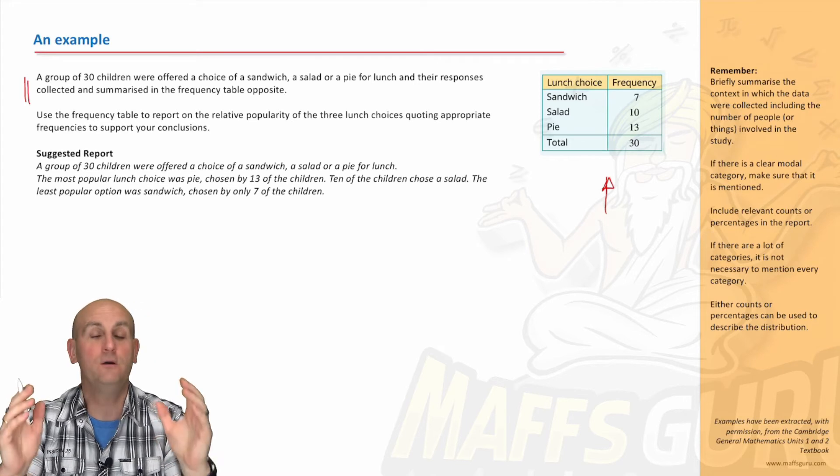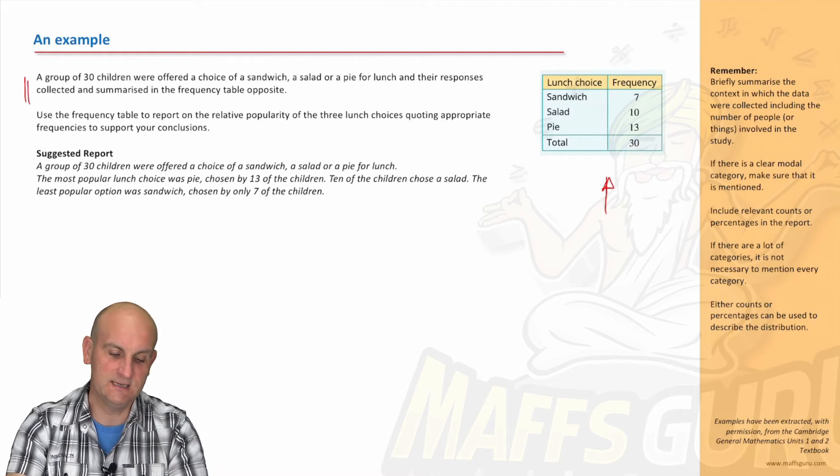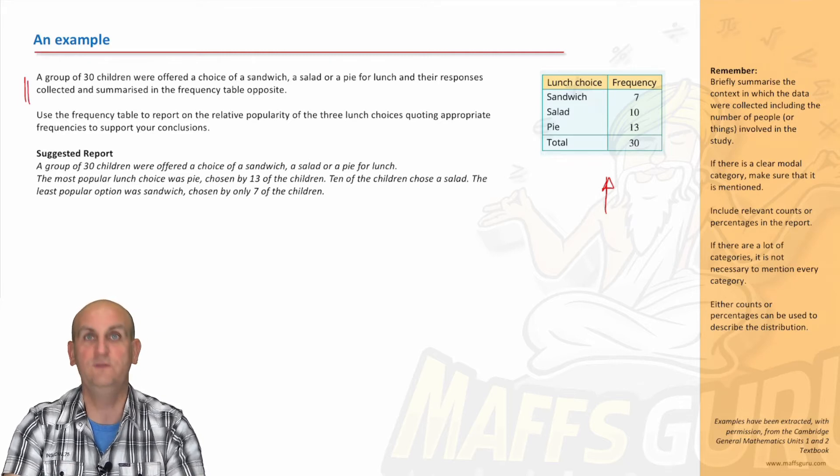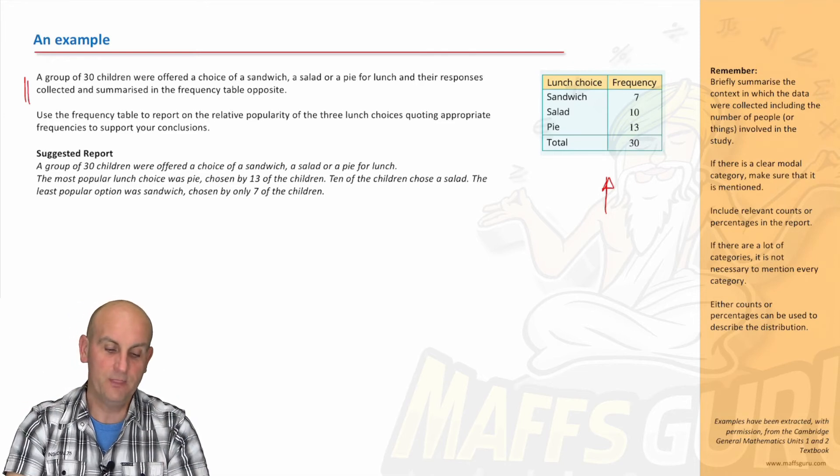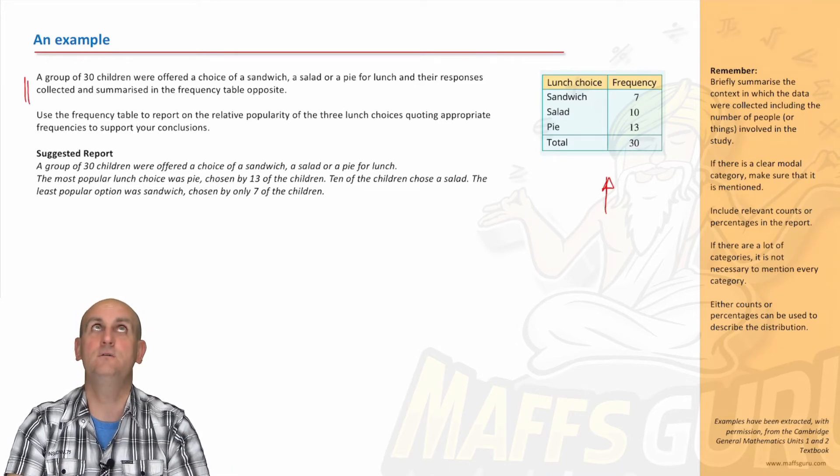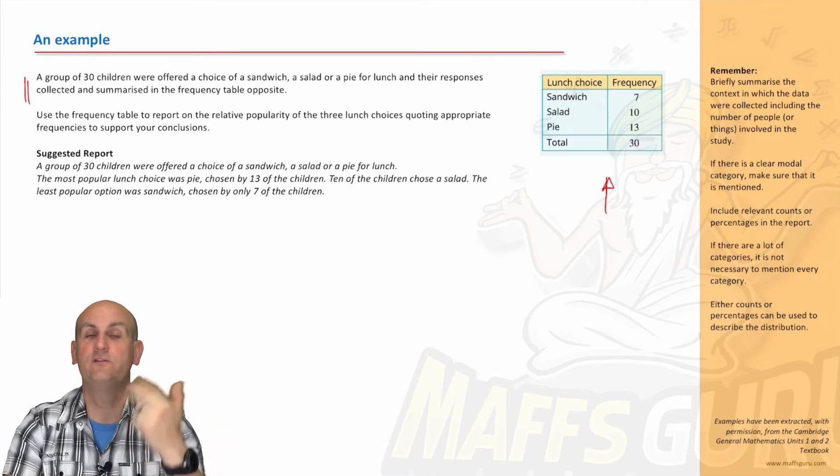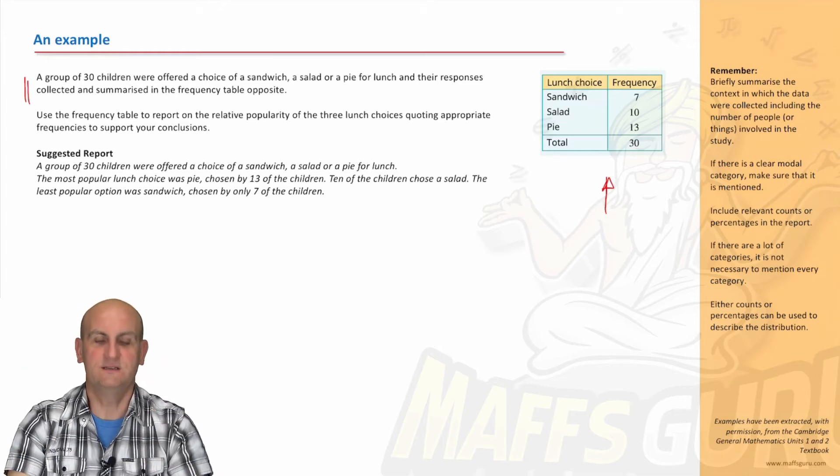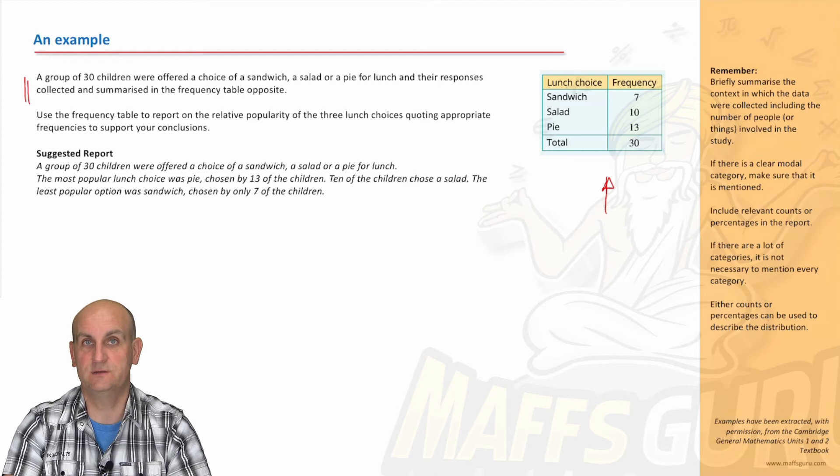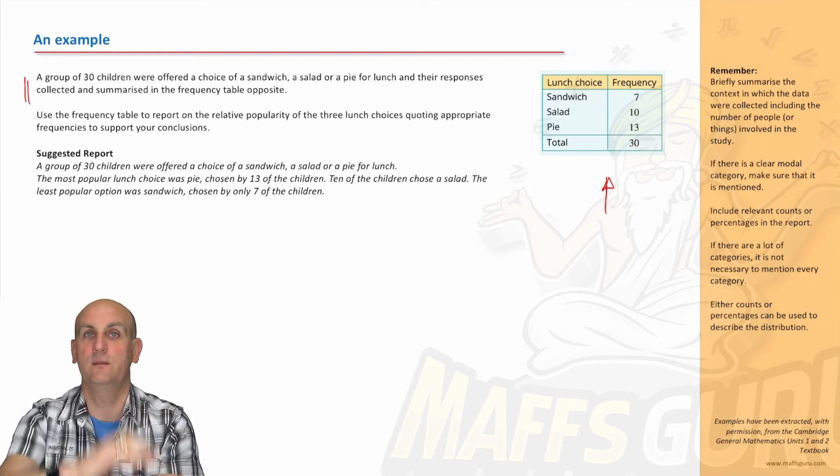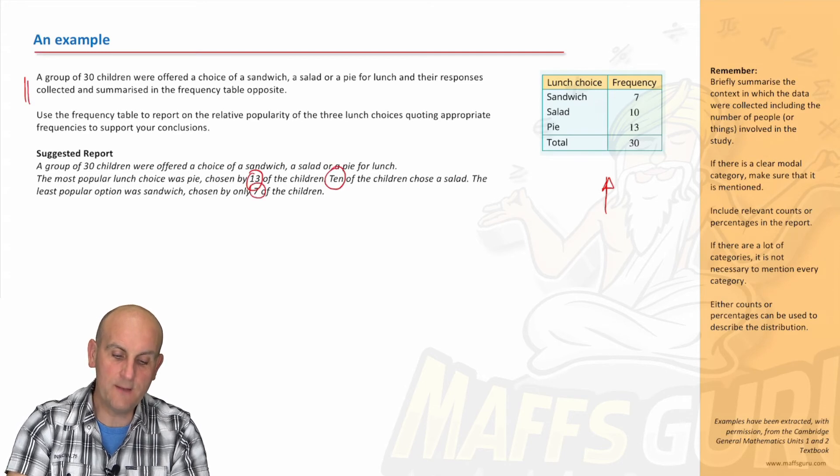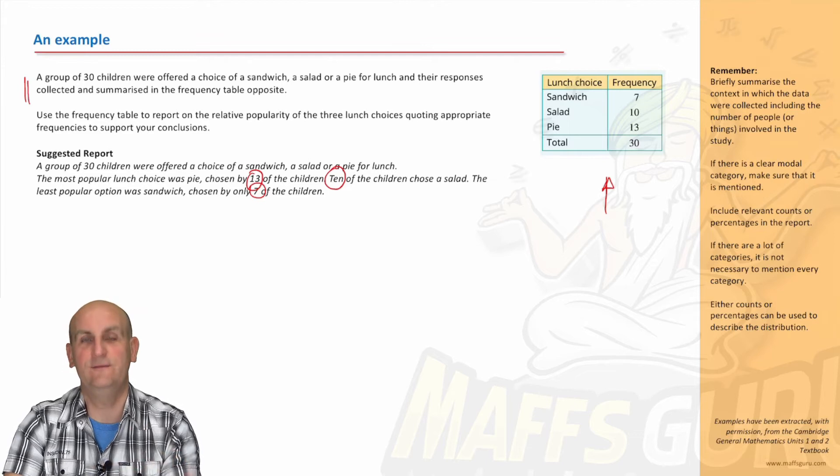Quoting appropriate frequencies to support your conclusions. That's just like saying, write the numbers. All right, so here's a suggested report. You can copy this into your summary book, change the numbers, but obviously it's more important that you understand. Oh my goodness, look how it starts. A group of 30 children were offered a choice of a sandwich, a salad, or a pie for lunch. That was actually the question. We've just copied that in to give context for what we're talking about. The most popular lunch choice was pie. Okay, is that fairly obvious? It's the highest one. Chosen by 13 of the children. Oh my goodness, we've given the pie and the number, and we've said it's the most popular. Most, we could have said modal, we could have thrown in some maths words. 10 of the chosen children chose a salad, and the least popular option was sandwich chosen by only seven of the students. Now what did we do there? We only had three data items, so we could talk about the most popular, the least popular, and the one in the middle. But for every single one, what did we write down? We wrote down the numbers that were included. There's no point with a statistical report if you don't write the numbers.